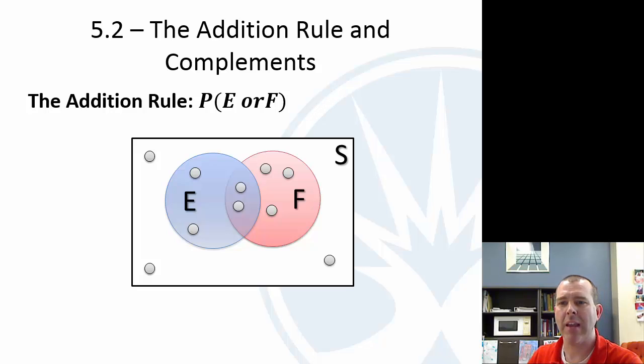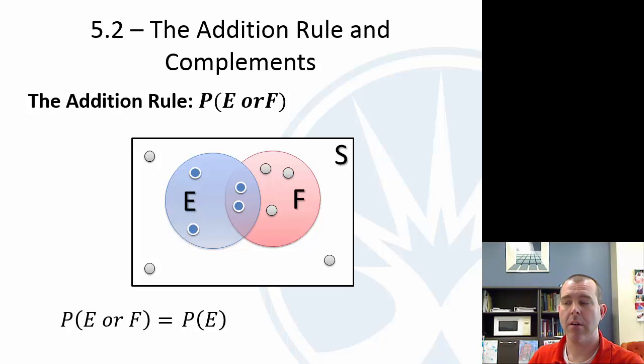So that's E. And what we want to look at is, what would be the probability that E happens or F happens? That's what we want to find, the probability of E or F. Well, we can add the probability of E plus the probability of F.